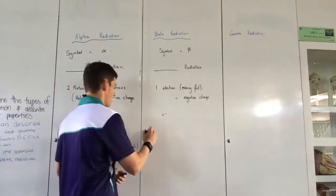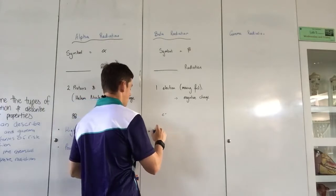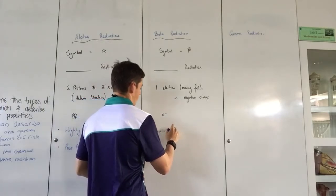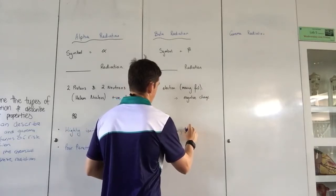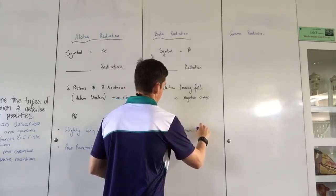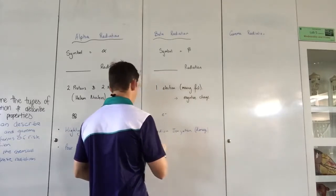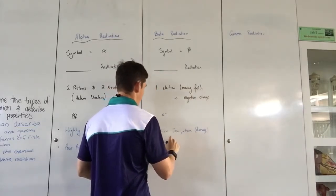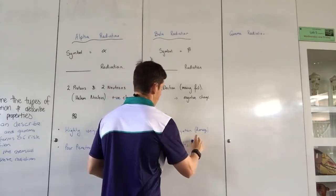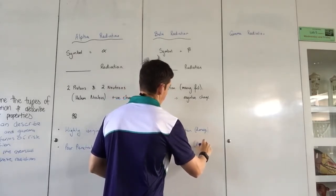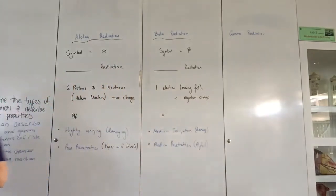Now it's not as highly ionizing as alpha. So it's got a medium ionization and in brackets that means damage. And a medium level of penetration. So aluminium will stop this. A few millimetres in a sheet of aluminium than paper, for example.